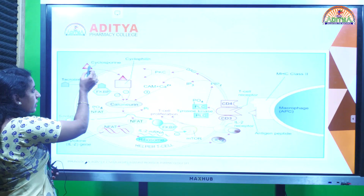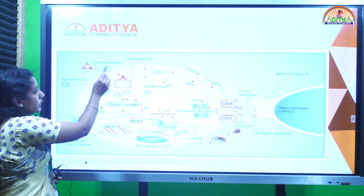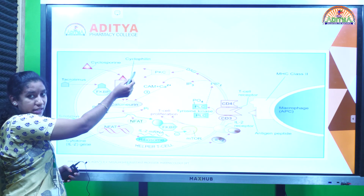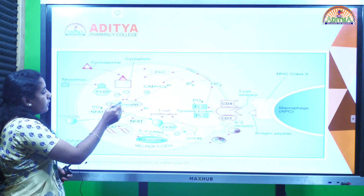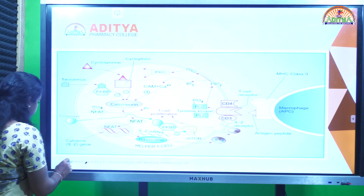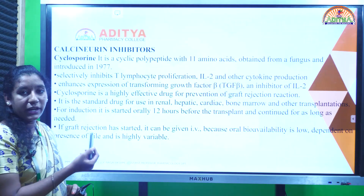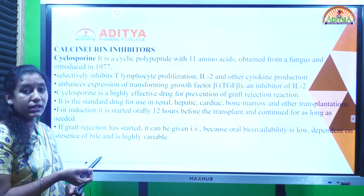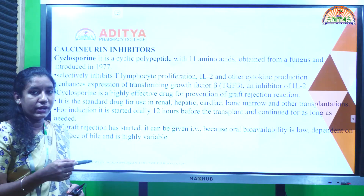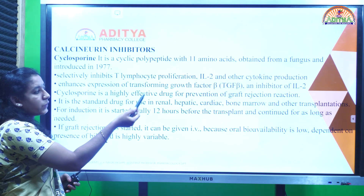Cyclosporine binds with cyclophilin and inhibits the activation of calcineurin, thereby inhibiting immune responses at the early stage. It is a cyclic polypeptide with 11 amino acids, obtained from a fungus, introduced in 1977. The mechanism of action: cyclosporine inhibits T cell proliferation and IL-2 and other cytokine production. If calcineurin is inhibited, it will not dephosphorylate any factor, and no cytokine genes will be produced.